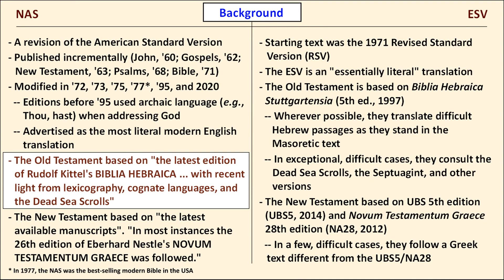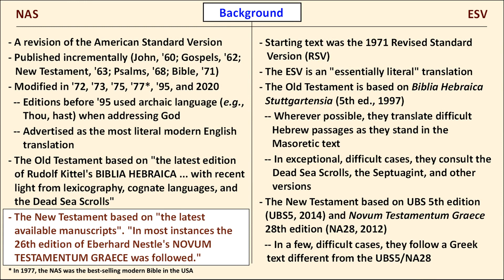The NAS Old Testament is based on an earlier edition of Biblia Hebraica, and its New Testament is based on the 26th edition of the Nestle-Aland Greek text. The 26th edition is only slightly different from the latest edition, the 28th, on which the ESV New Testament is based. I'll refer to those as NA26 and NA28. The NAS New Testament actually appears closer to the 19th-century Greek New Testament of Westcott and Hort than to NA26, based on my own admittedly limited examination.